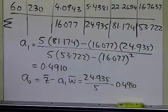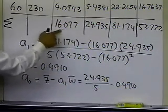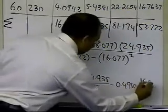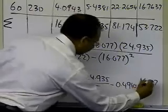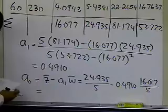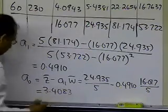W-bar is simply taking the summation of w's and dividing by 5, because we have five data points: 16.077 divided by 5. The a_0 value turns out to be equal to 3.4083.